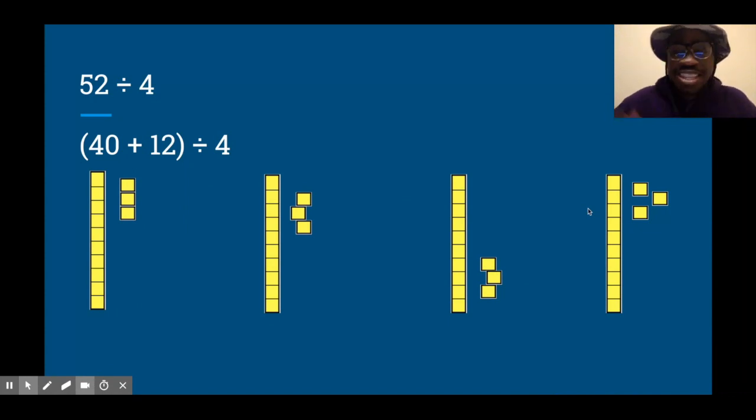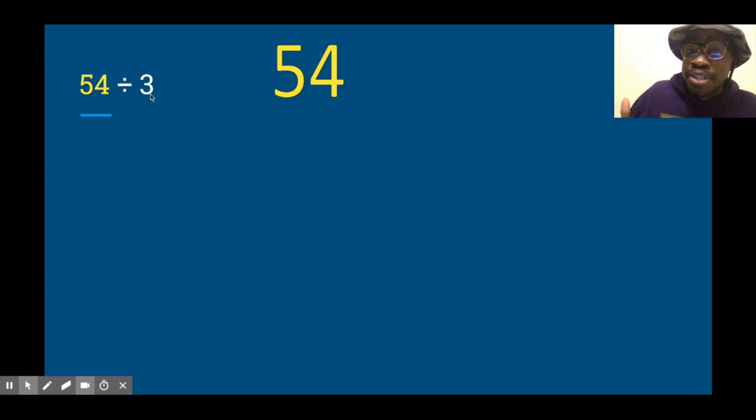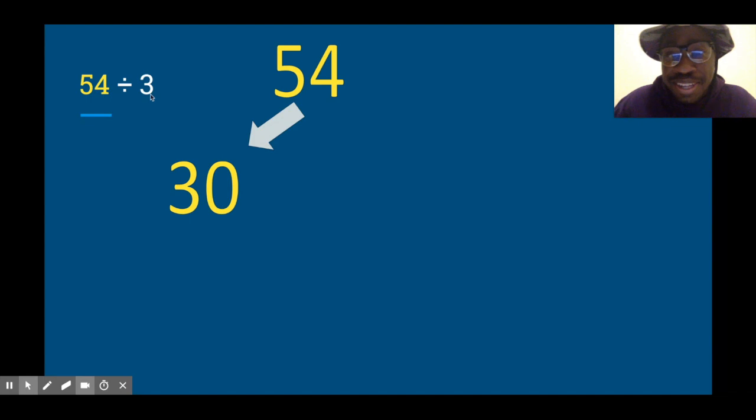Let's do another one. Alright, here's another one. 54 divided by 3. Again, we're going to decompose that 54 into smaller numbers, but we want to choose numbers that are going to be easy to divide by 3. Me personally, this is what I'm going to choose. 54 can be decomposed into 30 and 24.